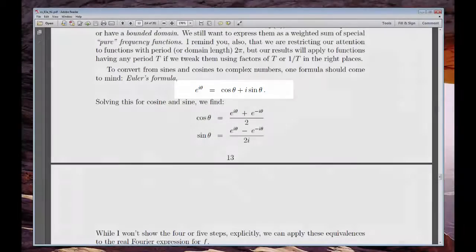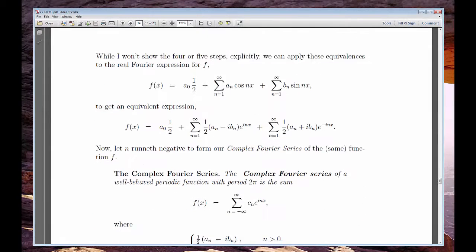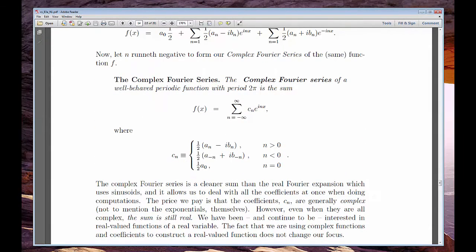If we start with that and make a few substitutions, we arrive at the complex form. The advantage is that it has a nice compact expression and it also sets up the Fourier transform coming next chapter.